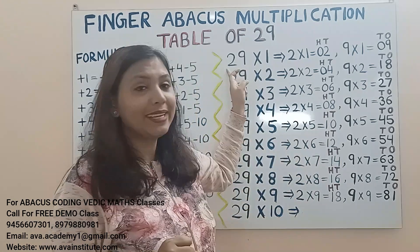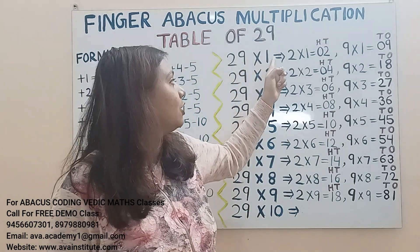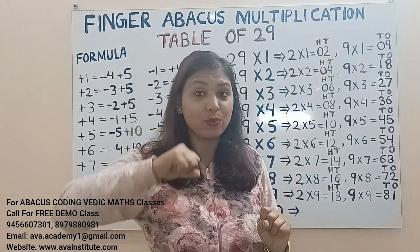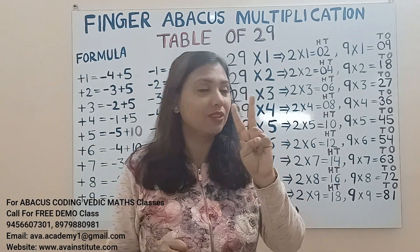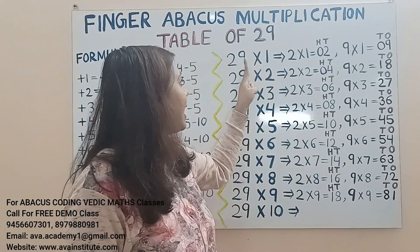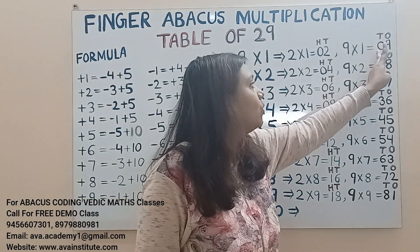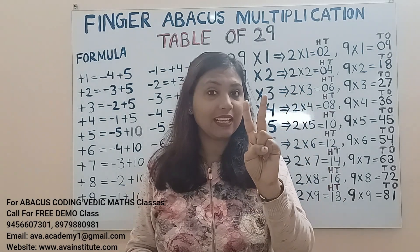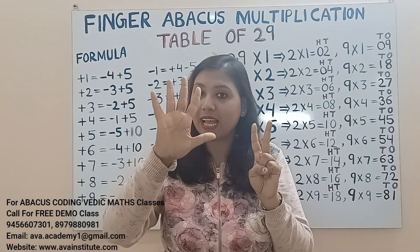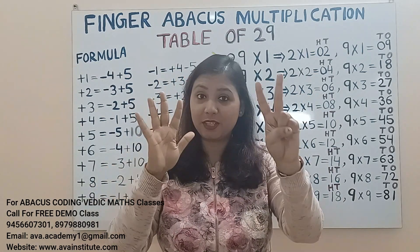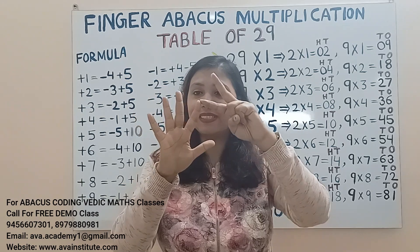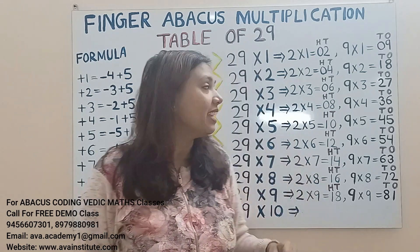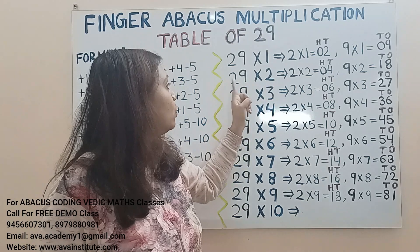Now let us carve 29 ones. 2 ones are 2 — represent 0 in tens and 2 in hundreds. 9 ones are 9 — represent 9 in tens and 0 in ones. So the answer is 10, 20... 5, 6, 7, 8, 9 — 29 is the answer.